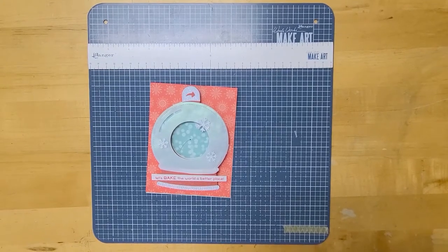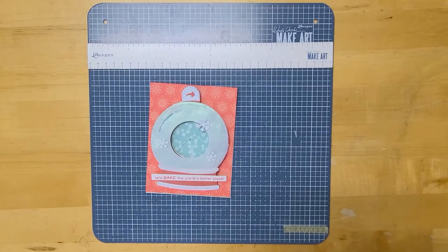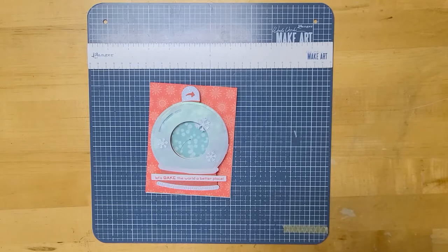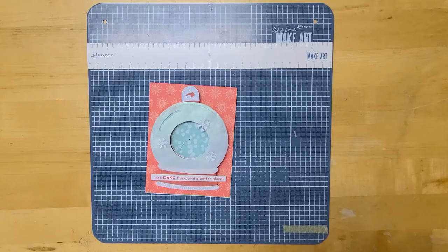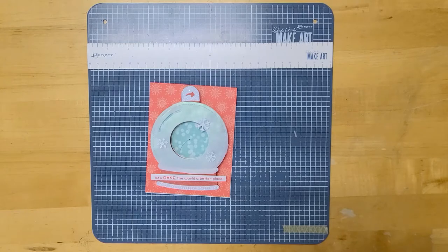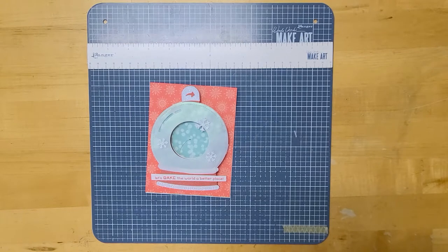Hi there everyone. Today I'm going to be showing you how to use the Lawn Fawn Magic Iris die set. In front of me here I have a sample card that was made using the Lawn Fawn Magic Iris as well as the Snow Globe add-on die that goes along with the Magic Iris.